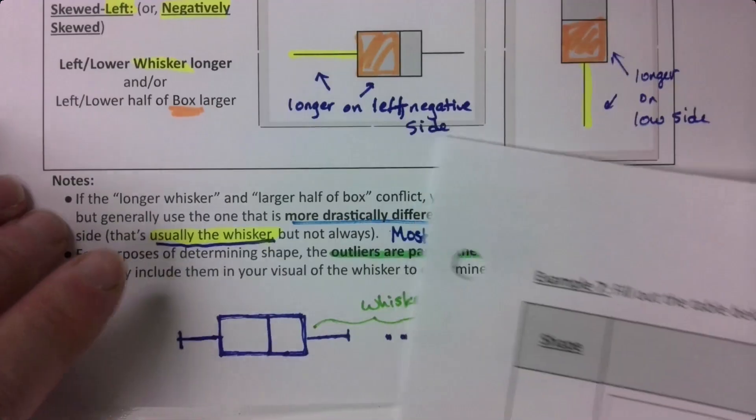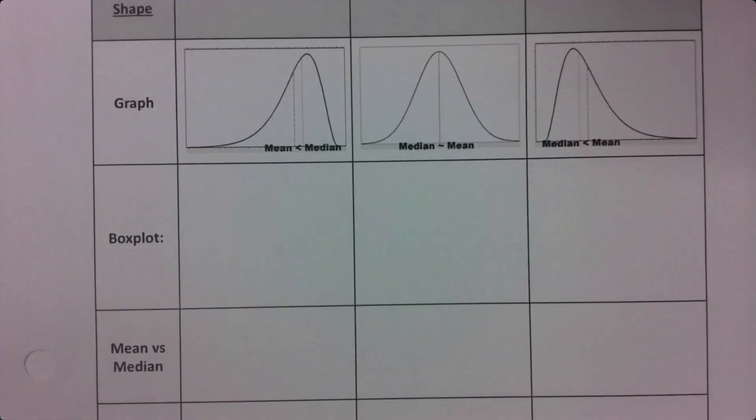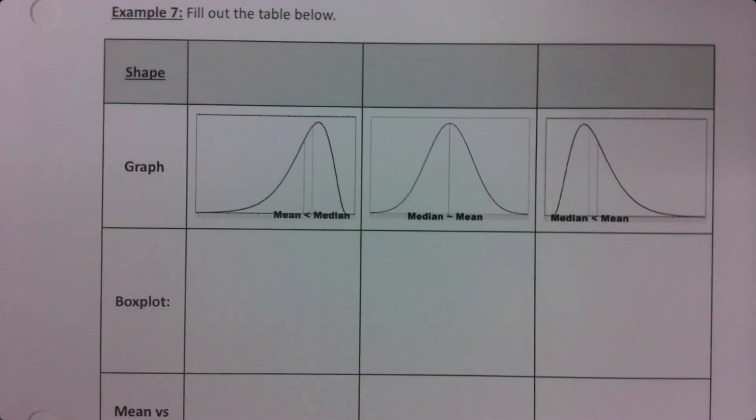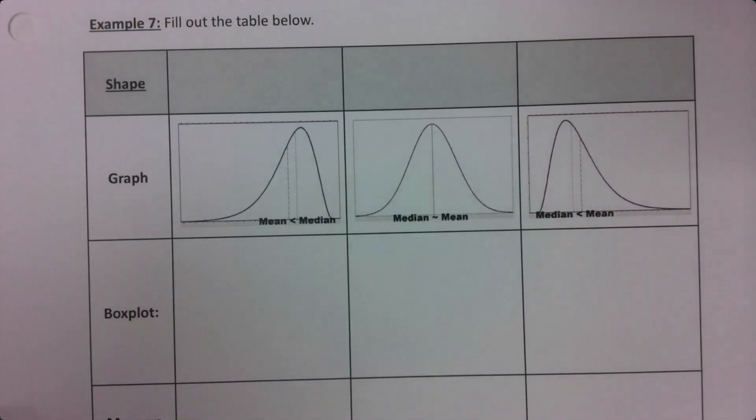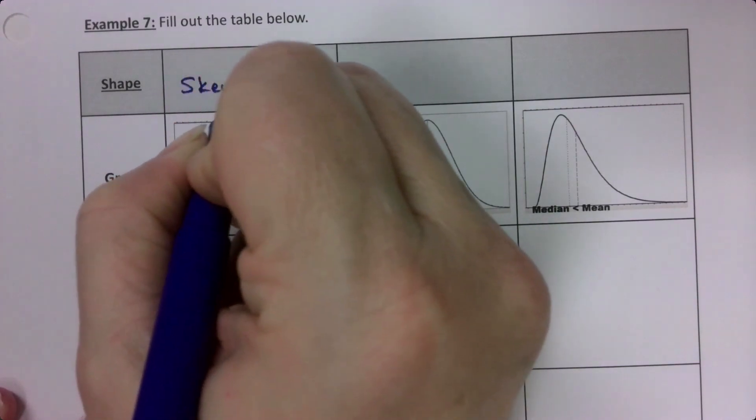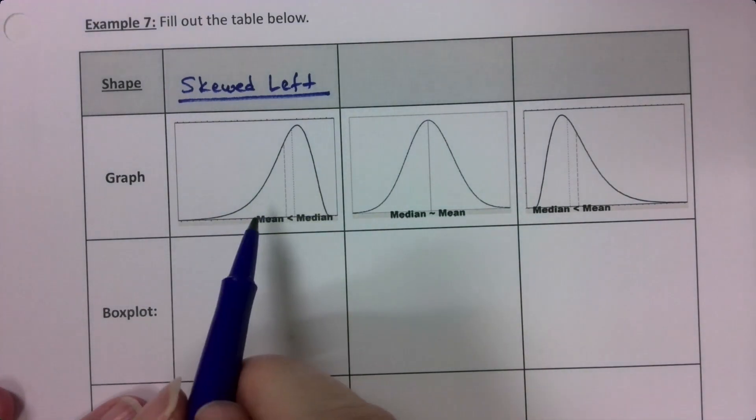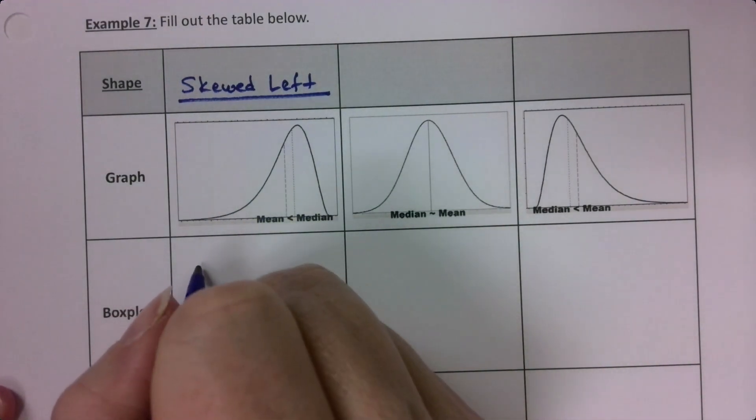Now let's recap everything we've learned into a lovely table that will be very important for us. So the shapes. Okay, so let's start with skewed left. This is what a skewed left graph looks like. If you were going to do like a histogram.